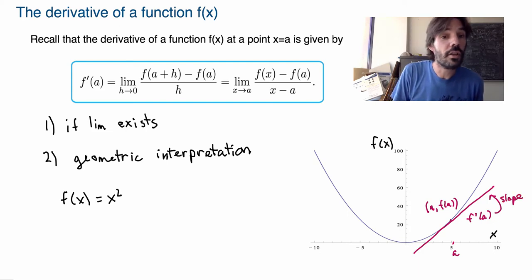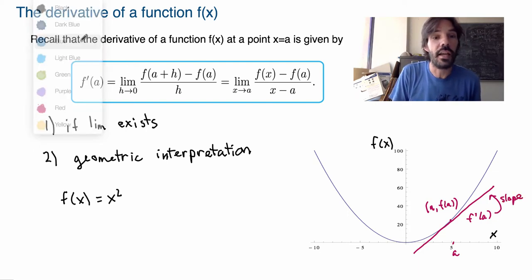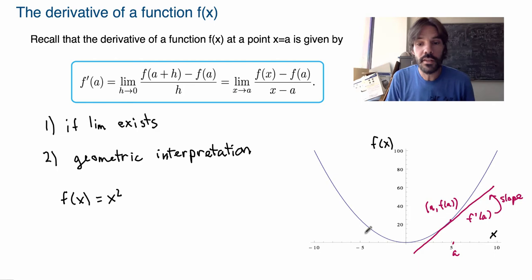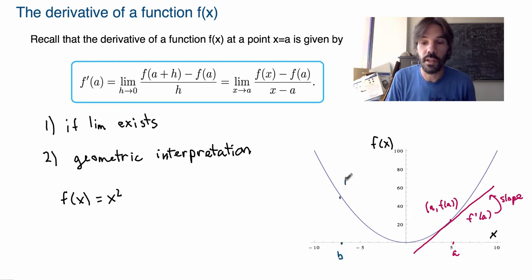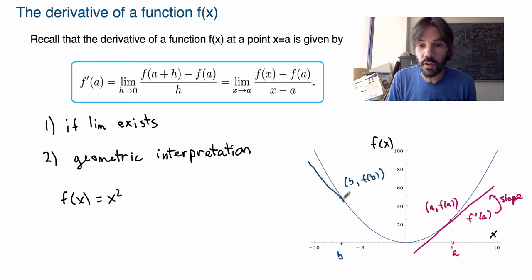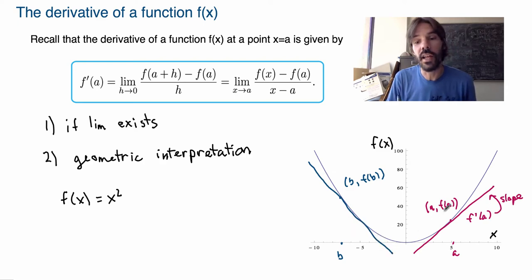One could ask: is there anything special about a? Of course a is not special. I could choose a different point b with its corresponding point (b, f(b)), and the derivative would give me the slope of the tangent line at that point. I could do that for any point on my curve.